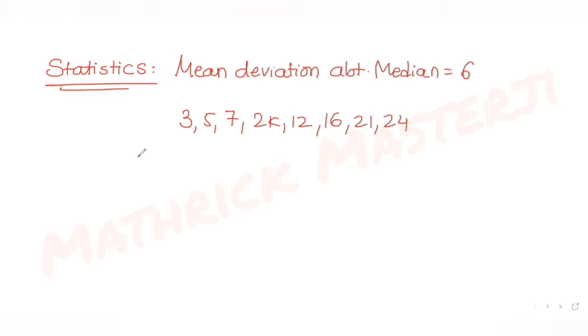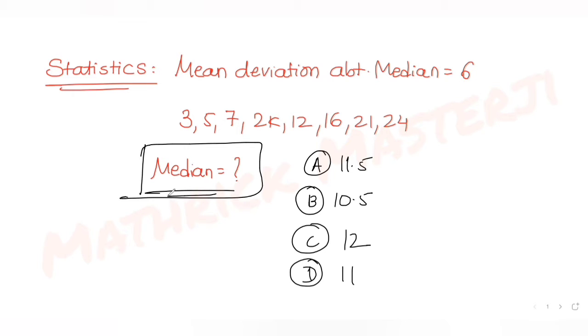If the mean deviation about median for these numbers is 6, we need to find the median. The answer choices are 11.5, 10.5, 12, and 11. We need to figure out which one is correct.